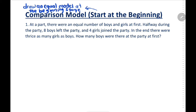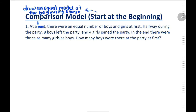For question one: At a party, there were an equal number of boys and girls at first. Halfway during the party, eight boys left and four girls joined. In the end, there were twice as many girls as boys. How many boys were at the party at first?